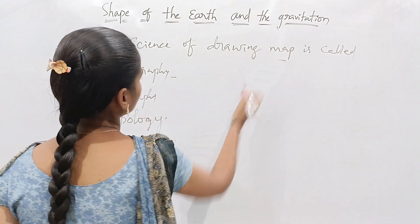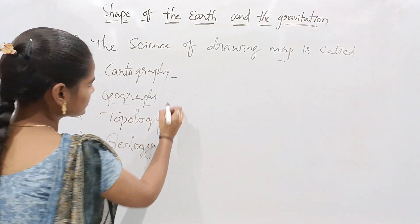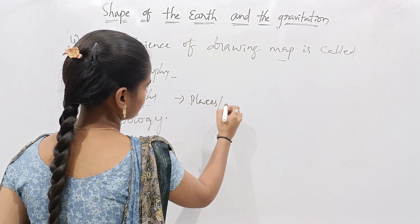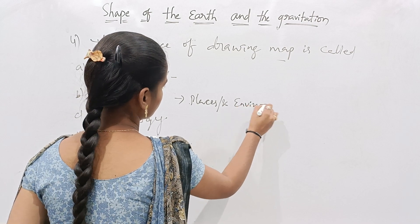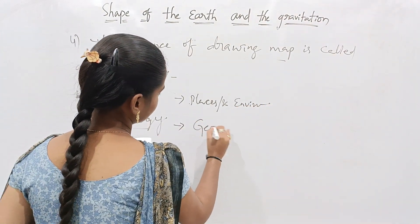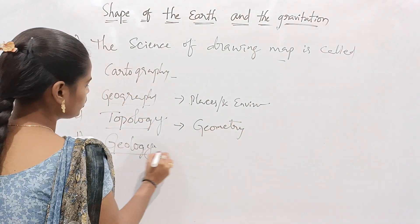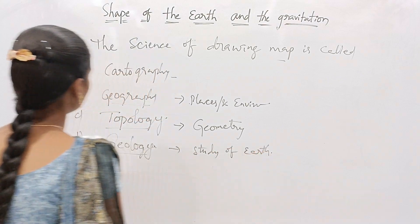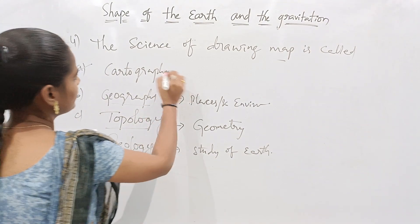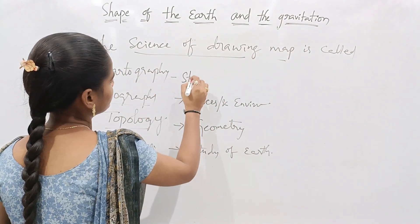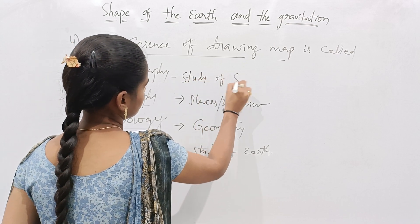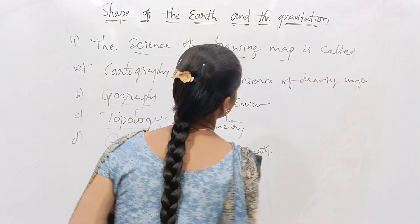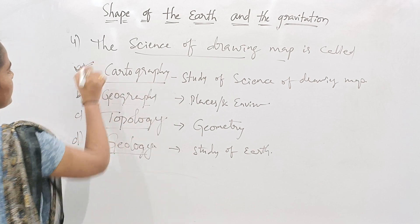Cartography means the science of drawing maps. Geography means the study of the relationship between places and environment. Topology means the study of geometry. And geology means the study of the earth. So Option A, Cartography, is the correct answer.